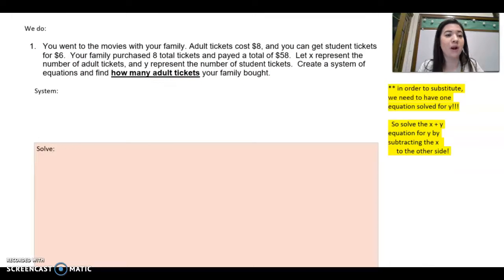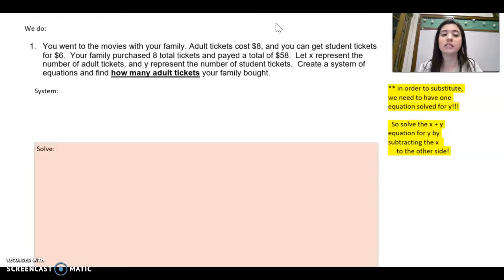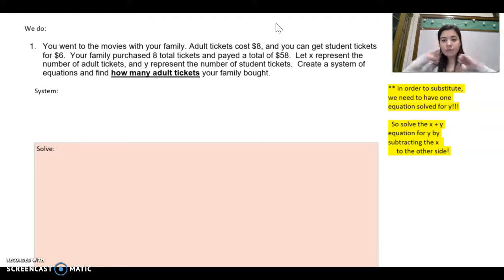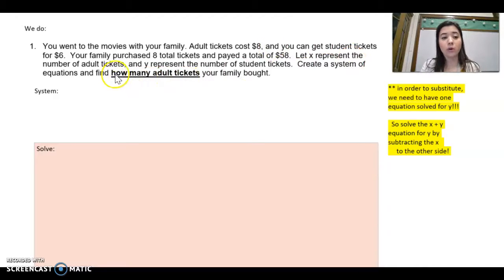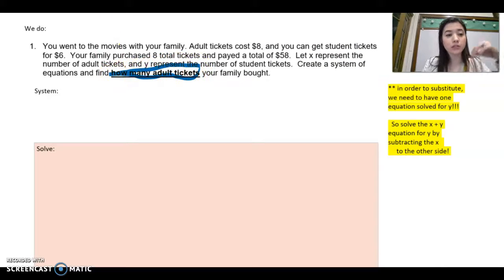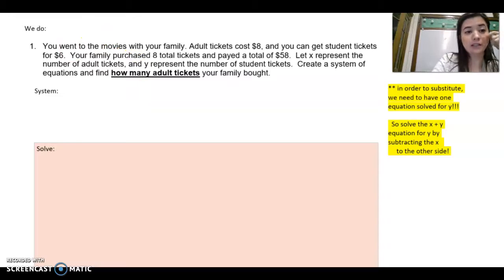You went to the movies with your family. Adult tickets cost eight dollars and student tickets cost six dollars. Your family purchased eight total tickets and paid a total of 58 dollars. X is adult tickets, Y is the number of student tickets. You need to create a system of equations and find how many adult tickets your family bought.